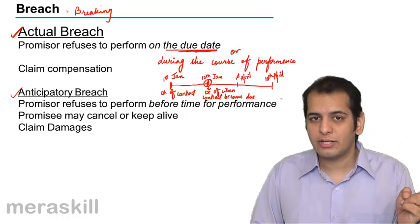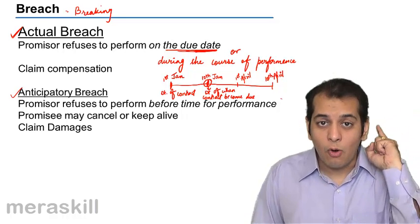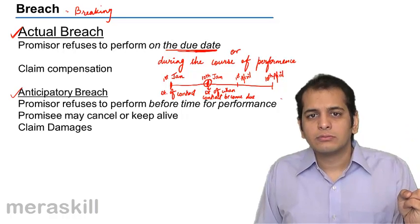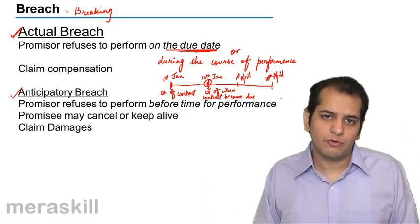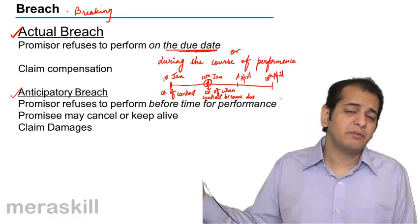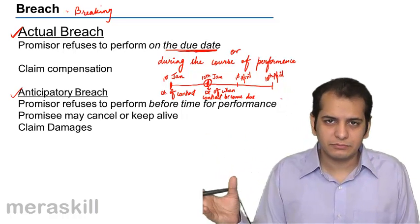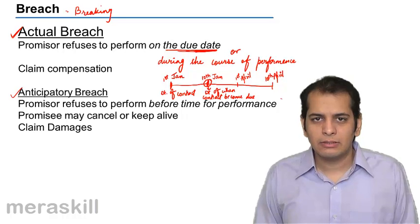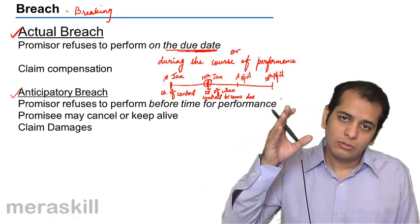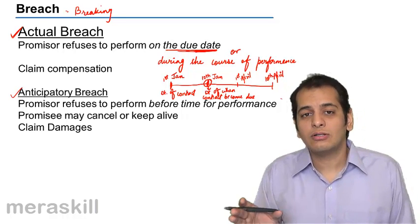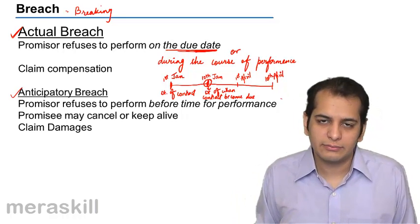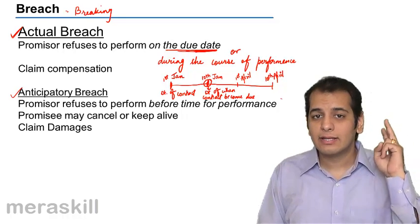Please remember: actual breach has two scenarios. First, where the promisor refuses to perform the contract on the due date — that is, when he is due to start the contract. Second, when he refuses to perform during the course of performance — that is, he has already started the contract and completed some percentage of it, maybe 5%, 15%, 50%, or 70%, but he has not completed it fully. During the course of performance he is refusing to complete the contract. This will also be called actual breach.